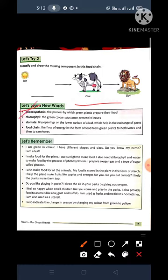Number 2 is chlorophyll. What is chlorophyll? The green color substance present in leaves. You know that already I have explained in the chapter so many times.